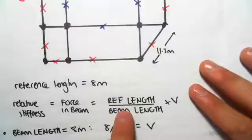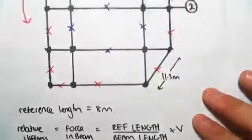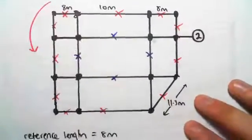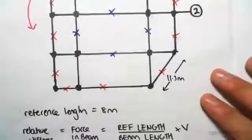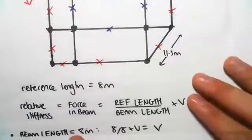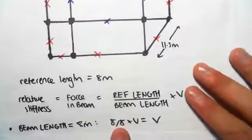If we're looking at an eight meter beam, we're going to define our reference length as eight meters, just like we did with the shear. For the beam length being eight meters, we do reference length over beam length, so eight divided by eight times V, which just gives us V.